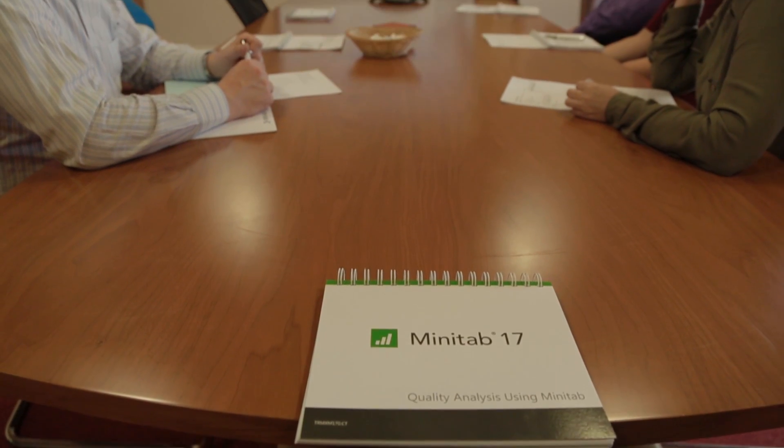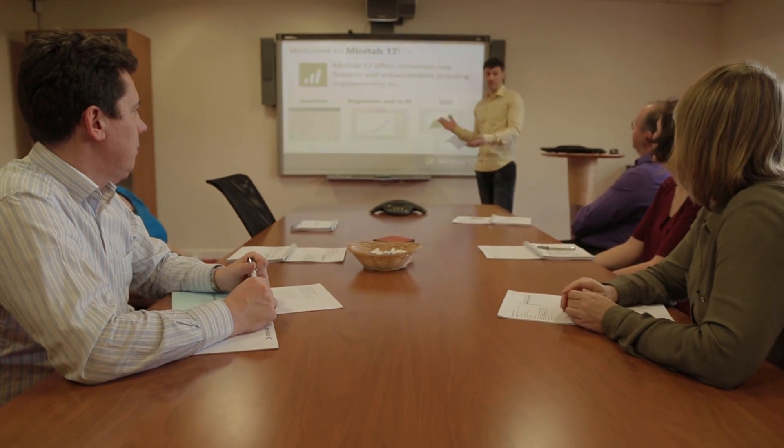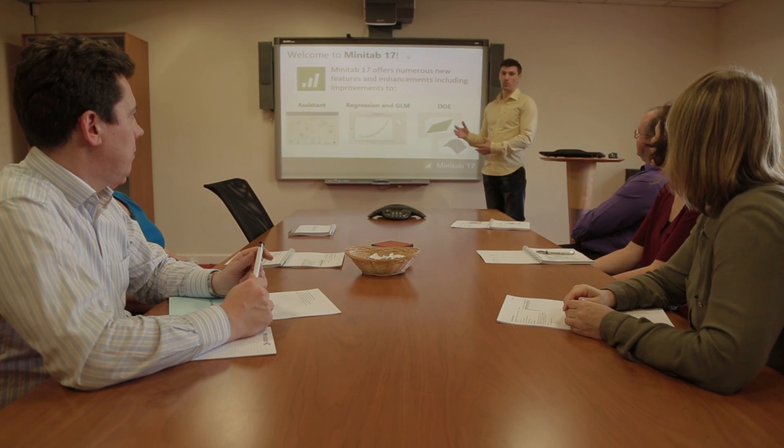You need different levels of training for different parts of the organisation. It's important that everybody at all levels has an appreciation of statistics and what it can do, but you don't necessarily need to know the nuts and bolts of every statistical test. If someone is only looking at control charts, you only need to train them on control charts — how to interpret and analyse them. At the board level, you don't need to know the nitty-gritty statistics, but you need to understand the concepts of what it can deliver and appreciate it.